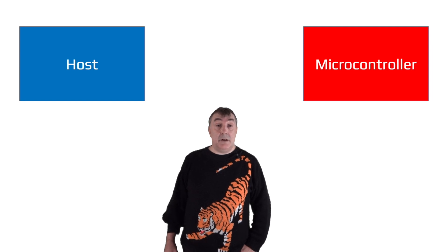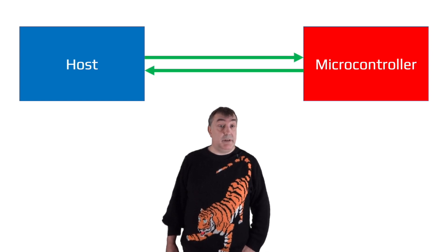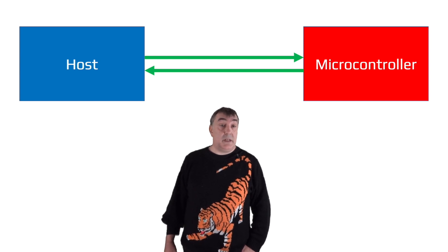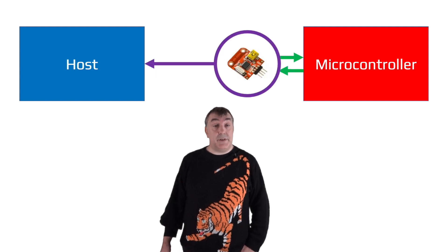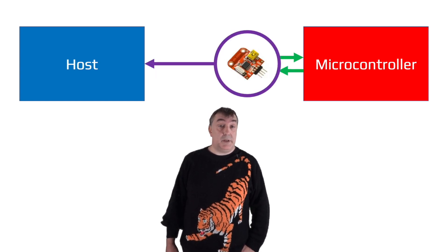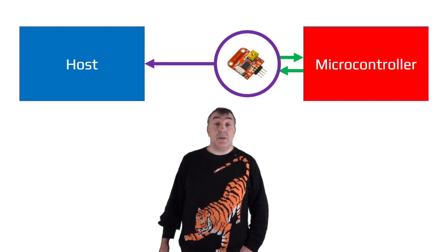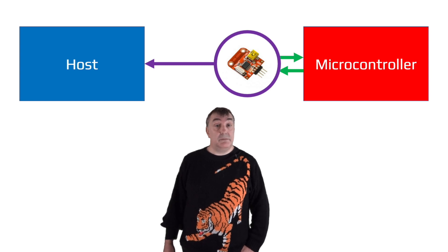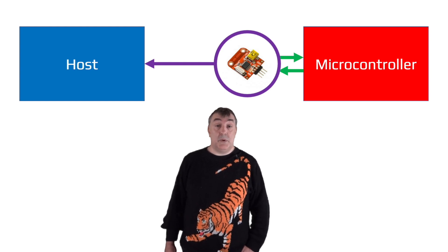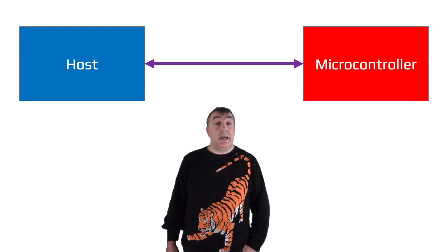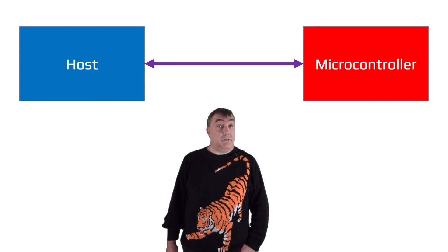MIN relies only on a simple serial link. PCs used to talk serial directly in the old days, but now they all use USB. The normal solution is to have a USB-to-serial adapter of some kind, which can often be built into the USB cable. This appears on the PC as a virtual serial port, so the software just sends bytes down the serial line to the microcontroller. Some modern microcontrollers support USB directly and also appear on the PC as a virtual serial port.